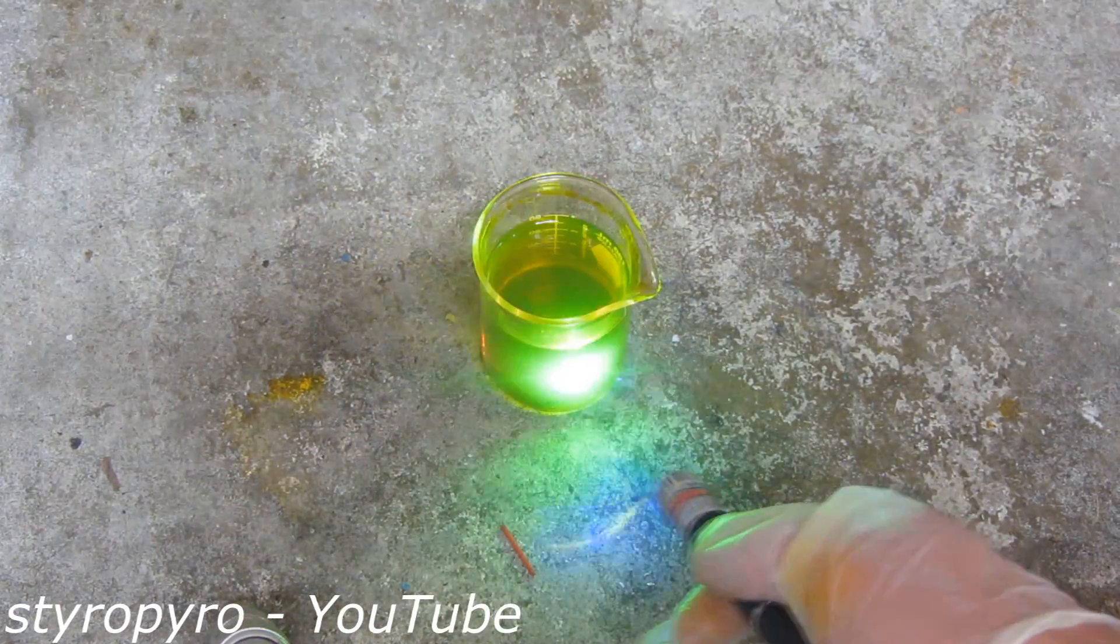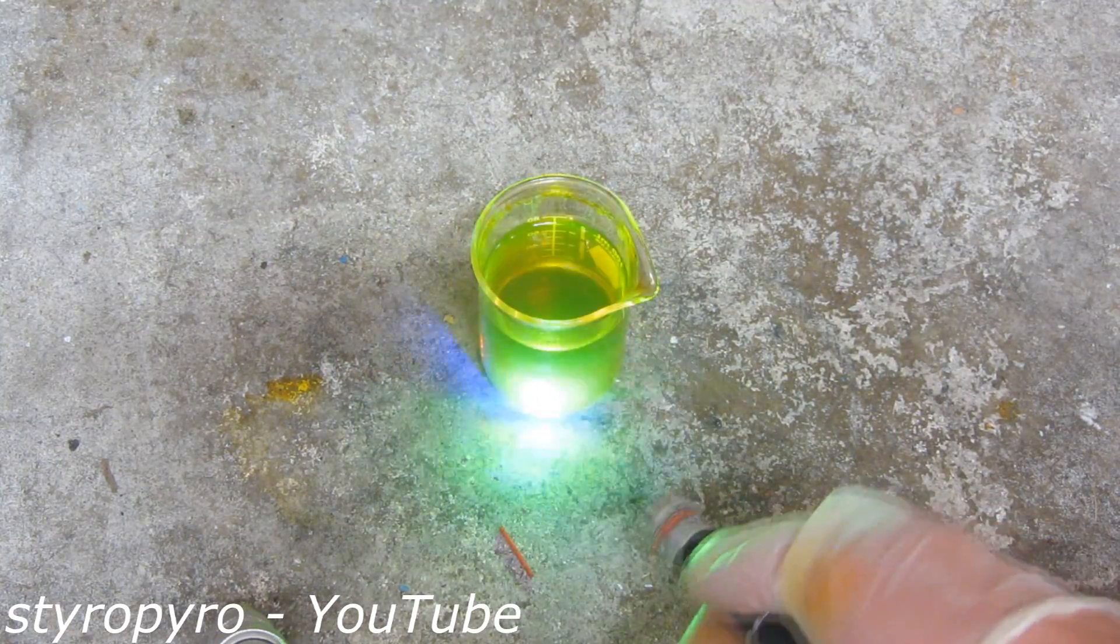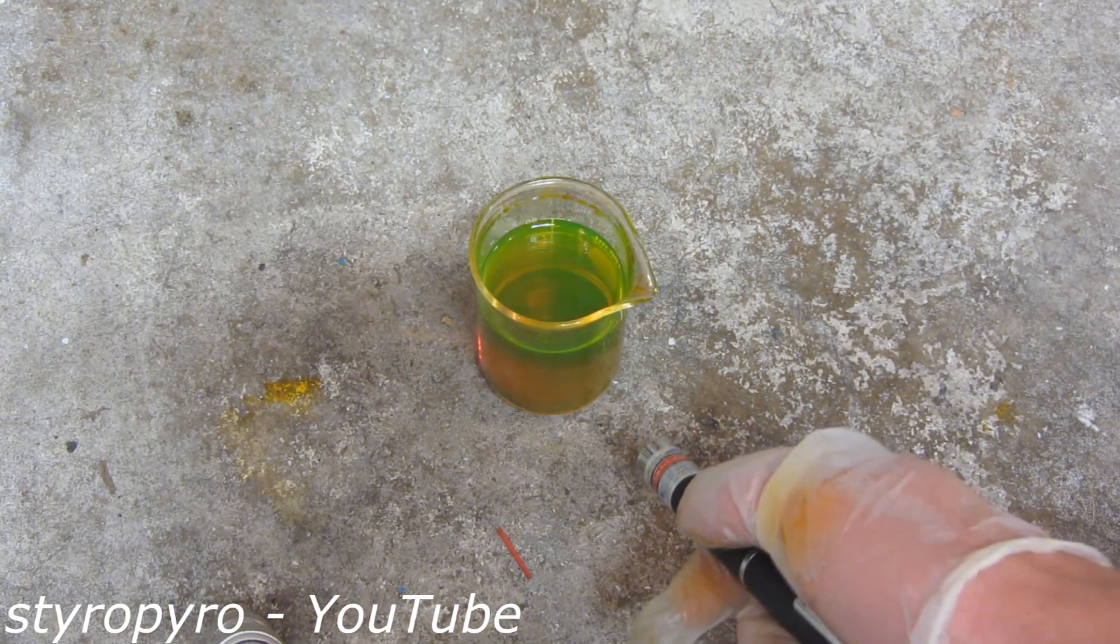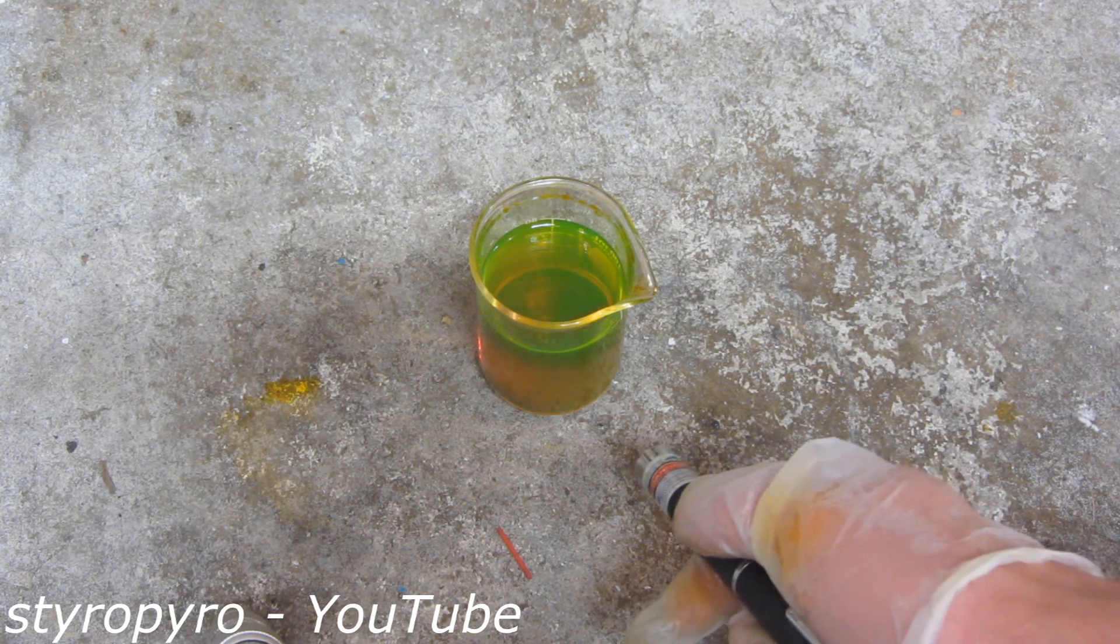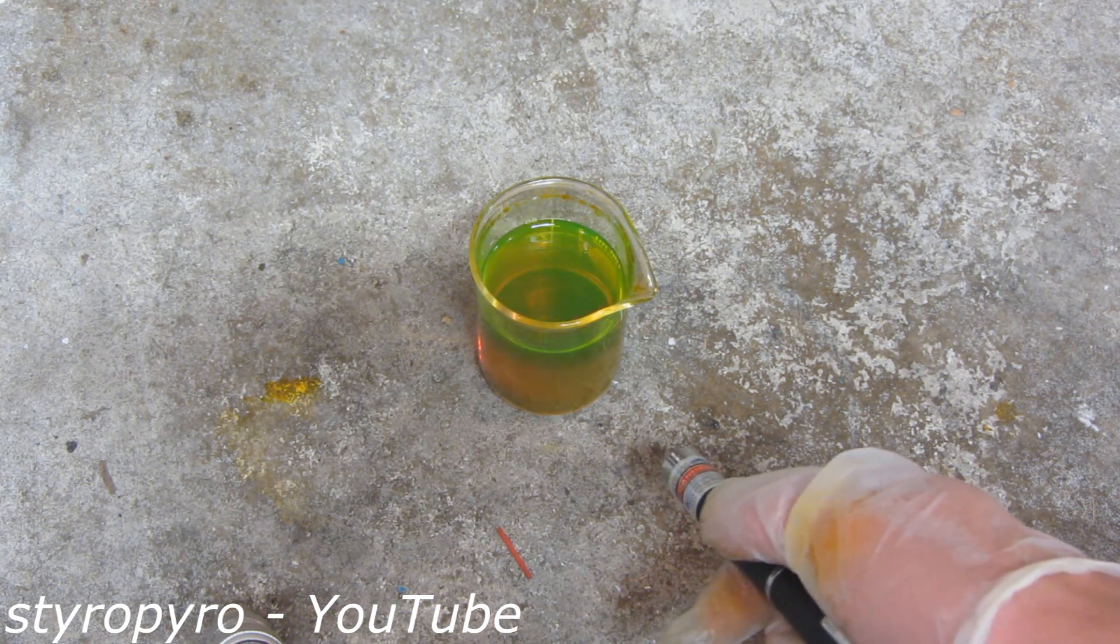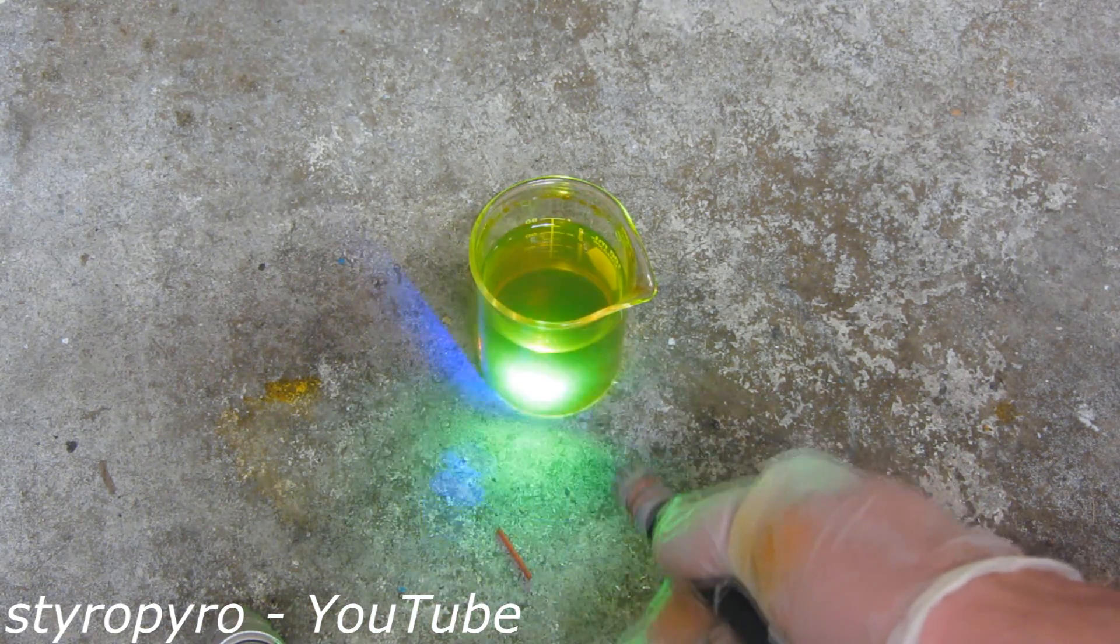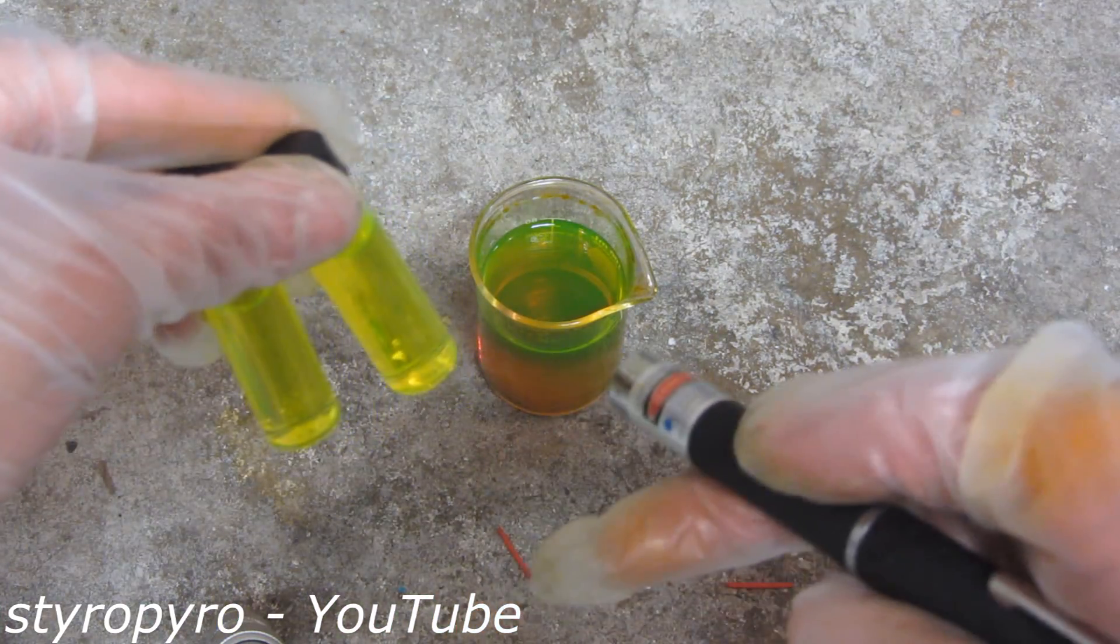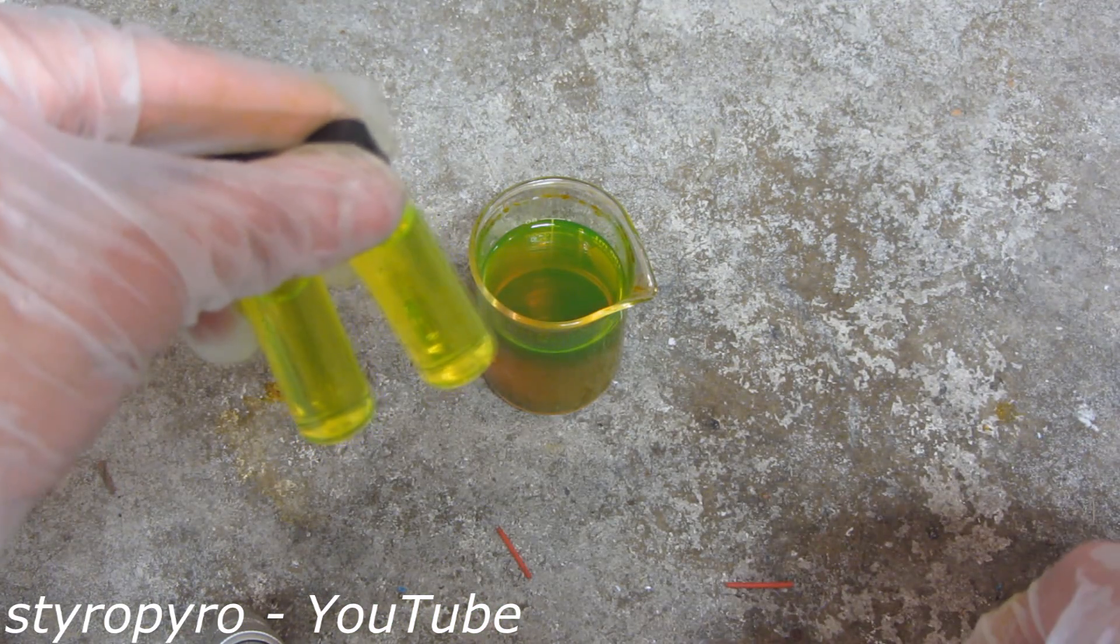I decided to go with ethanol for the solvent system because when compared to water, the energy gap between the ground state and excited states of fluorescein has actually decreased, which causes the fluorescent emission to be redshifted a little bit to actually right about the peak of human visibility. In fact, right here I have two vials. The one on the left is fluorescein in water, and the one on the right is fluorescein in ethanol.